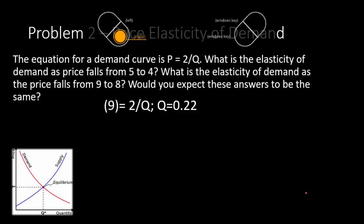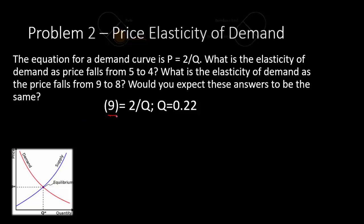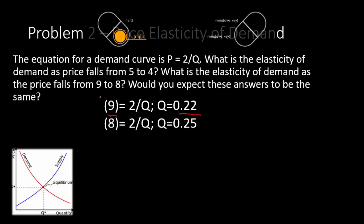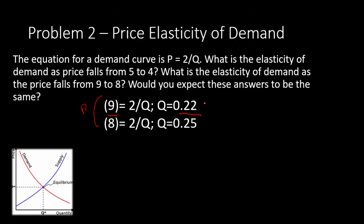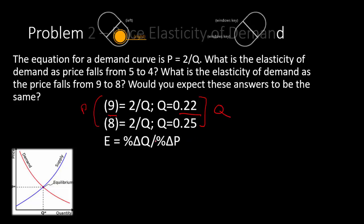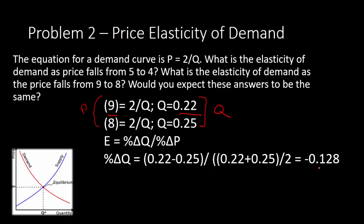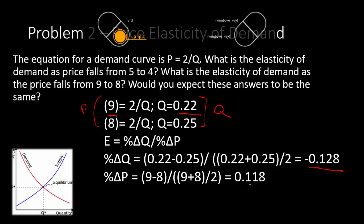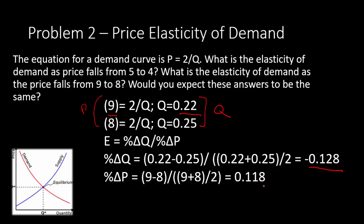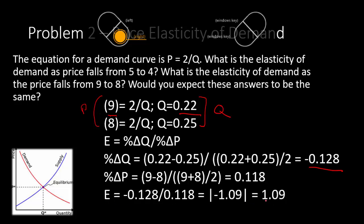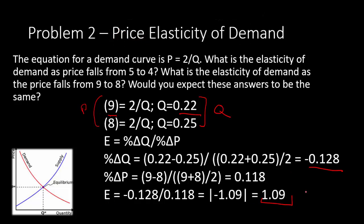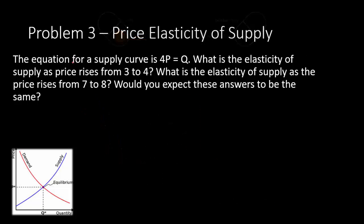For the second pair of prices — 9 and 8 — the quantities are 0.22 and the price change is 0.118, giving an elasticity of 0.09, which is slightly inelastic. So the two price ranges give different elasticities on this demand curve.